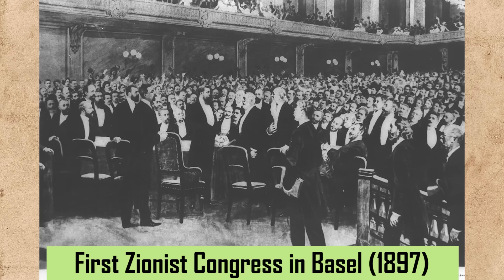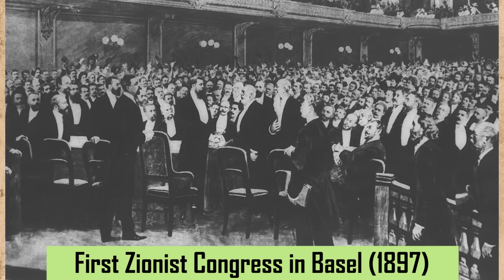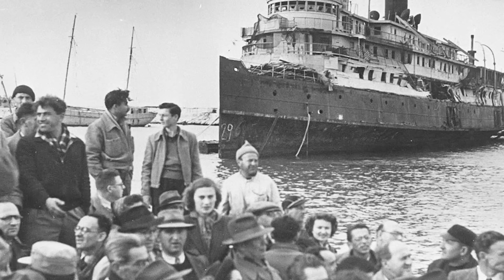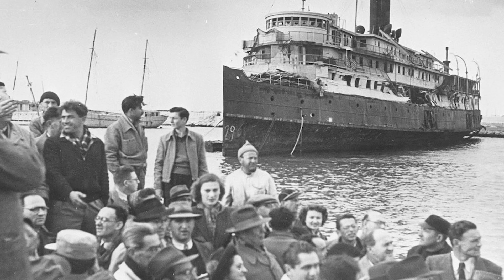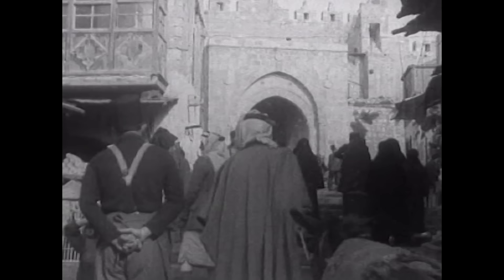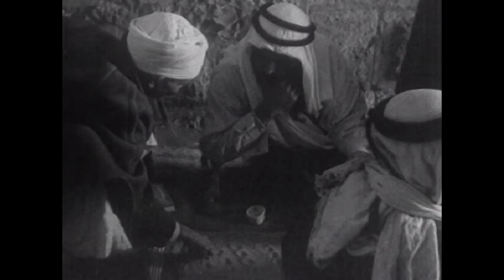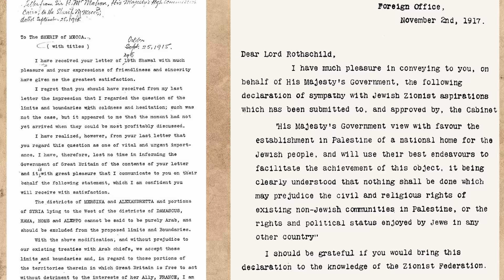The British hoped that this promise would persuade important members of the Jewish community in America and even in Russia to throw the full weight of their support on the Allied war effort. Zionist hopes were certainly raised by the declaration. Jews had been migrating in significant numbers to Palestine since the turn of the 20th century, in order to escape persecution in Eastern Europe. In terms of what this meant for the Arabs already living there, the declaration did mention that nothing shall be done which may prejudice the civil and religious rights of existing non-Jewish communities in Palestine.